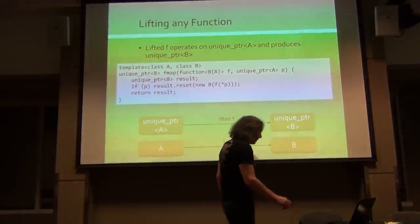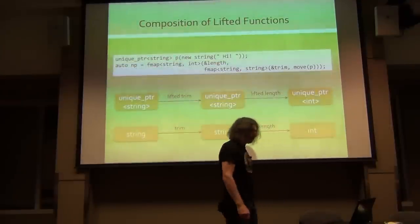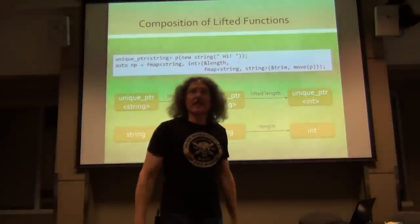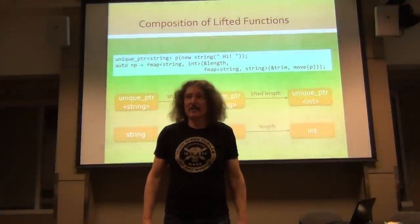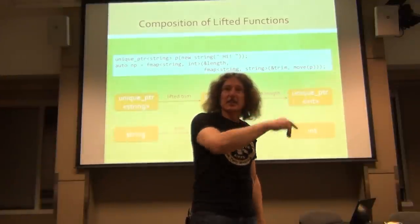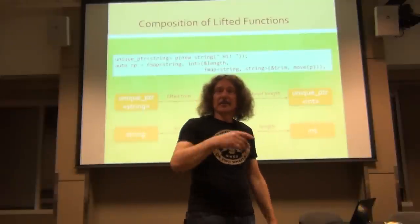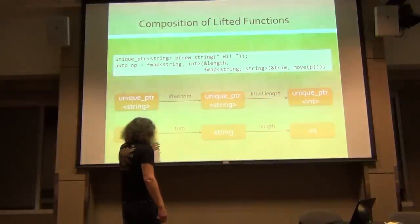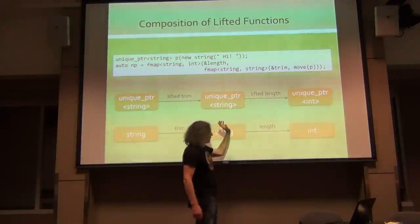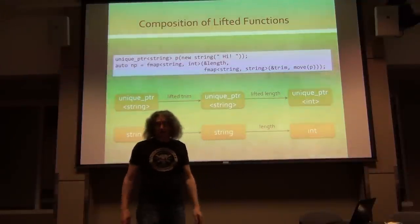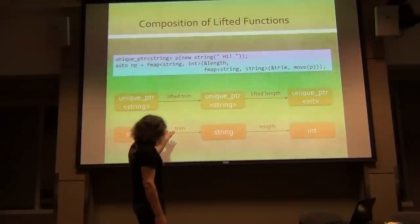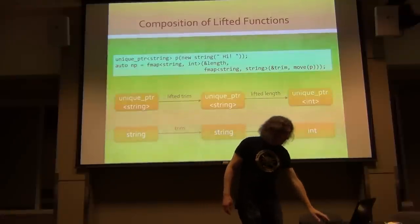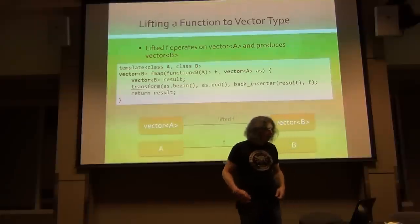And you can chain them. Also, no problem. You see, if the first one, for instance, contains a null, and then this null in the unique pointer will be propagated all over. No functions will be called because there's always this checking. So if you have, for instance, trim the string, and then calculate its length, you can lift it, you have lifted trim, lifted length, and it goes through the string.